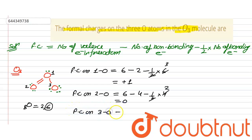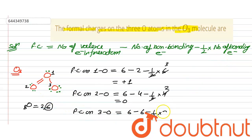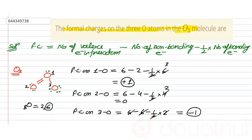For the third oxygen atom, the valence electrons are 6. The non-bonding electrons are 6. There is only one bond, giving 2 bonding electrons. So: 6 − 6 − (½ × 2) = 6 − 6 − 1 = −1. The formal charge on the third oxygen is −1. To summarize: first oxygen is +1, second is 0, third is −1.